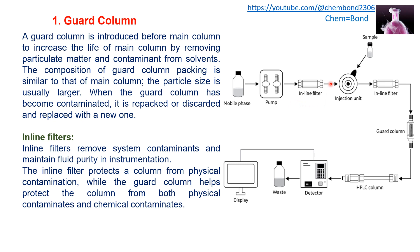The inline filter removes dust particles or any particulate material moving toward the main column — it filters out physical contaminants only. The guard column traps both physical contaminants (particulates) and chemical contaminants that would react irreversibly with the packing material of the main column. So the inline filter handles physical contaminants, while the guard column handles both physical and chemical contaminants.